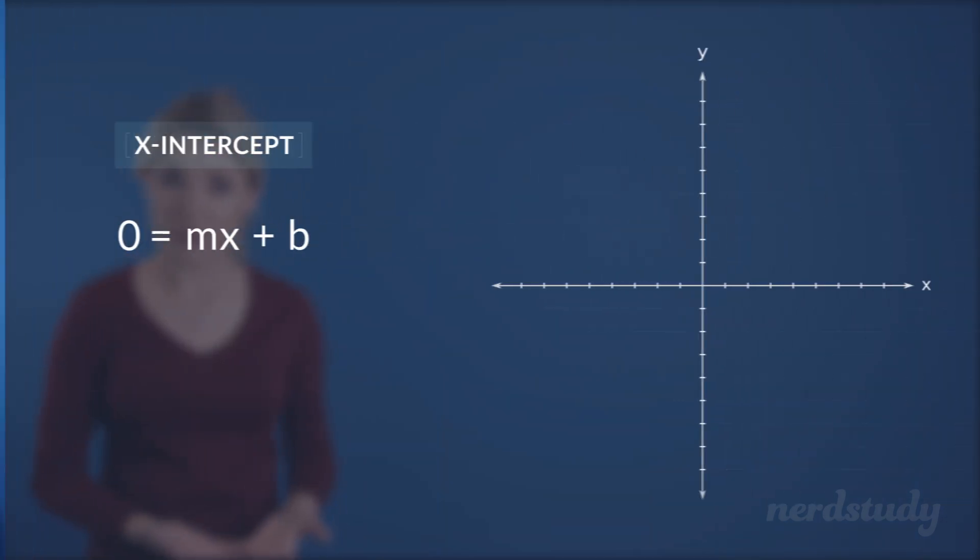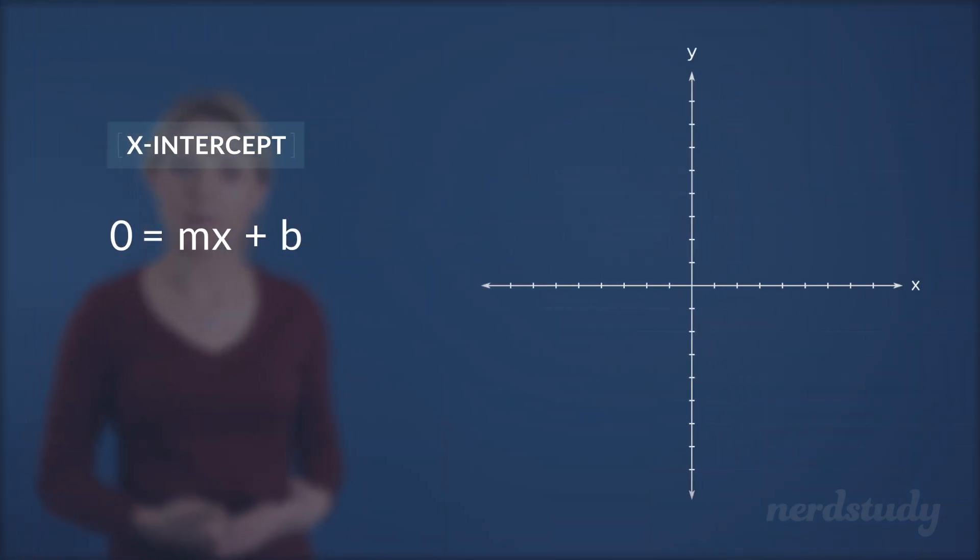So, naturally then, the x-intercept is the point in which the line graph intersects the x-axis.